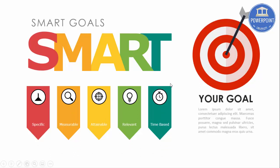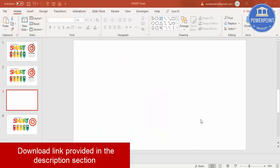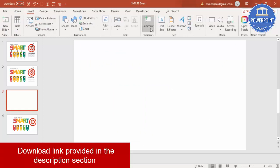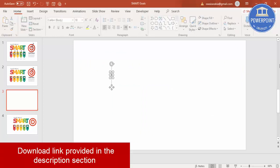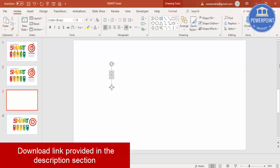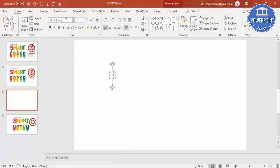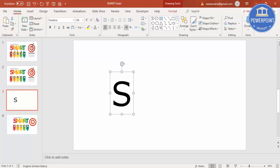To add the text, go to Insert, then Text Box, and just type a capital S. The font I'm going to select is Verdana, the size should be 166, and make it bold.